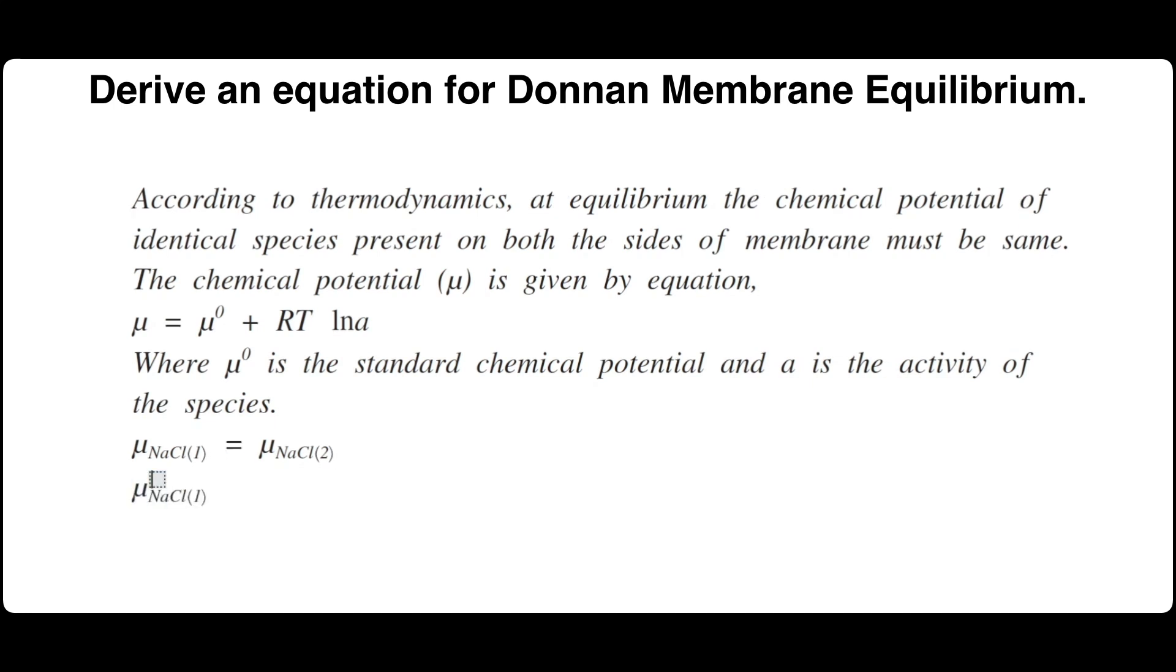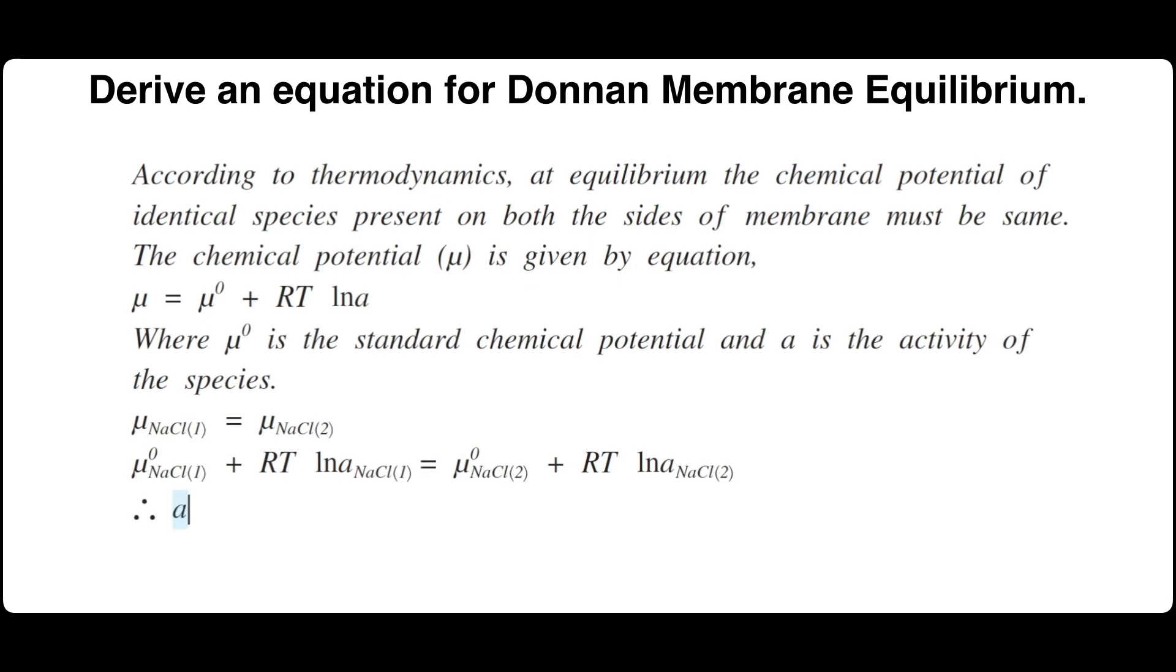Let's substitute the values. μ°NaCl1 plus RT natural log of activity of NaCl1 equals μ°NaCl2 plus RT natural log of activity of NaCl2. As the standard chemical potential is constant, we can cancel μ°NaCl and also R and T get cancelled.